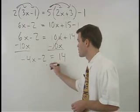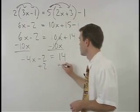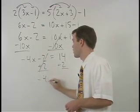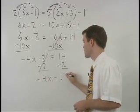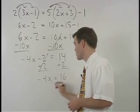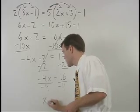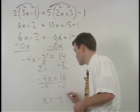Add 2 to both sides, and we have negative 4x equals 16. Divide both sides by negative 4, and x equals negative 4.